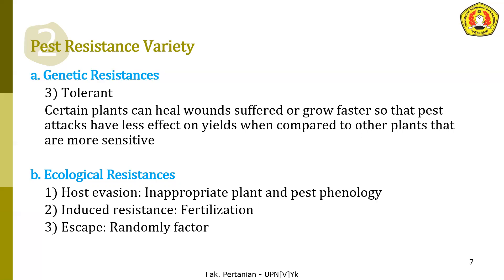Evasion is due to inappropriate plant and pest phenology. (Ada ketidakcocokan antara phenology — kenampakan dan karakter yang tampak pada tanaman dan pada serangga — sehingga serangga tidak mampu menjangkau tanaman tersebut.) Another type is induced resistance. Induced resistance is a resistance that is induced by microorganisms or by chemicals applied to the plant, so the plant becomes more resistant against the pest.